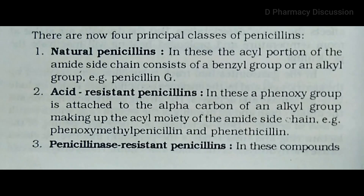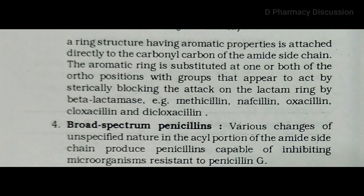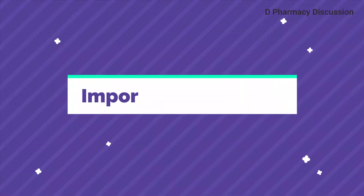Extra points: Penicillins are classified into four principal classes — natural penicillin, acid resistant penicillin, penicillinase resistant penicillin, and broad spectrum penicillin. For natural penicillin, the acyl portion of the amide side chain consists of a benzyl or alkyl group, example penicillin G. For acid resistant penicillin, a phenoxy group is attached to the alpha carbon of an alkyl group, example phenoxymethyl penicillin. Penicillinase resistant penicillins have a ring structure with aromatic properties attached directly to the carbonyl carbon of the amide side chain. For broad spectrum antibiotics, various changes in the acyl portion of the amide side chain produce penicillins capable of inhibiting microorganisms resistant to penicillin G.